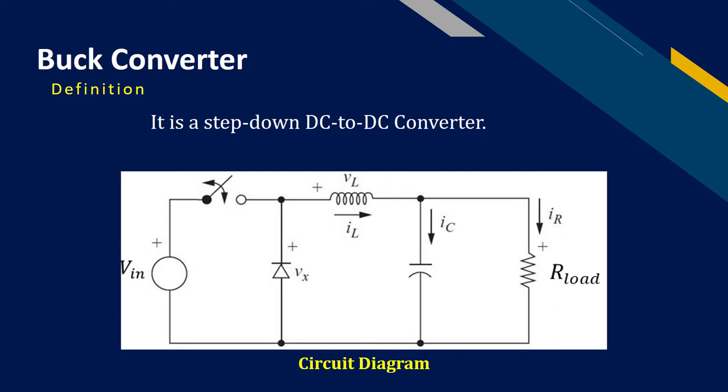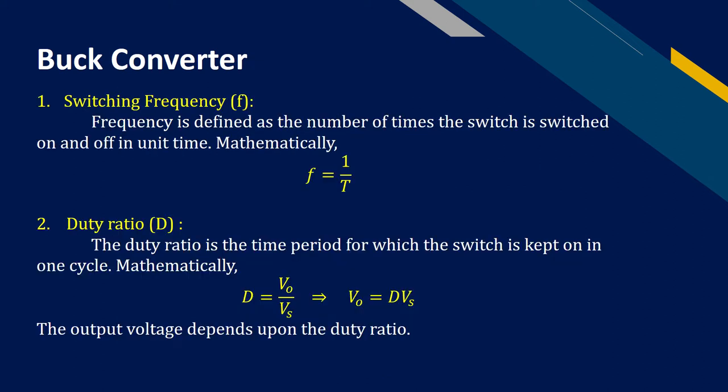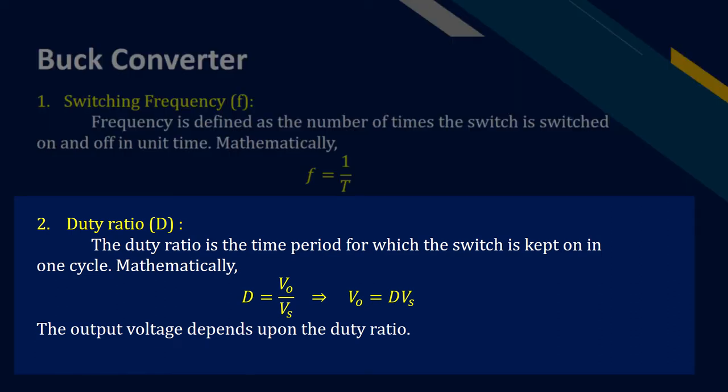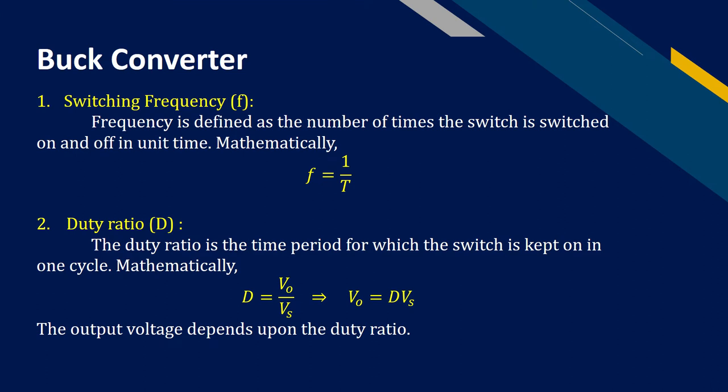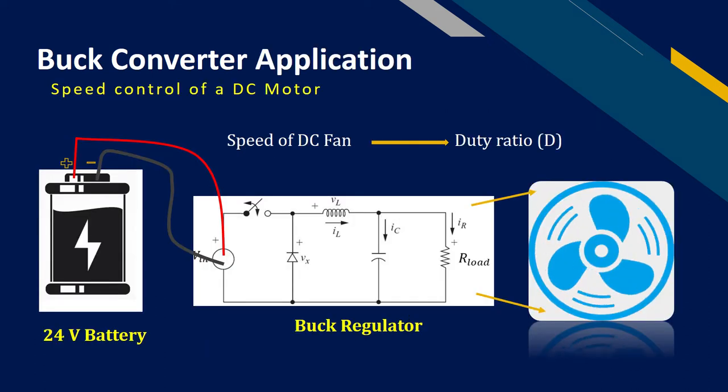The circuit also consists of a switch. This switch is switched on and off in every cycle. The number of cycles per unit second is termed as the frequency. Usually, this frequency is kept higher than the audible range of human beings. The second important parameter is the duty ratio. The duty ratio is the time period in which the switch is kept on. The output voltage depends upon the duty ratio. Higher the duty ratio, the larger will be the output voltage.